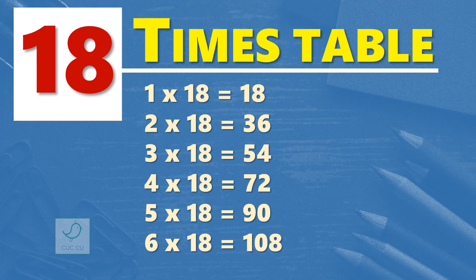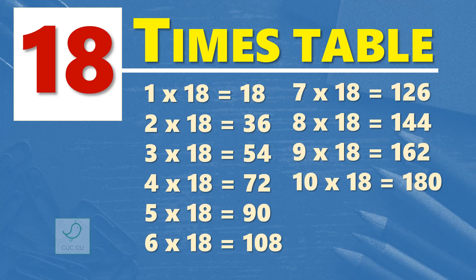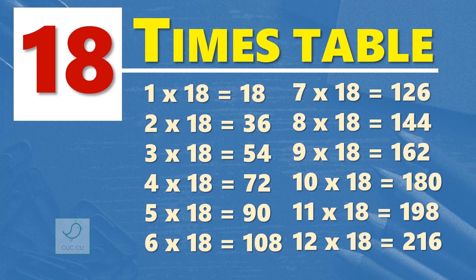7 times 18 are 126. 8 times 18 are 144. 9 times 18 are 162. 10 times 18 are 180. 11 times 18 are 198. 12 times 18 are 216.